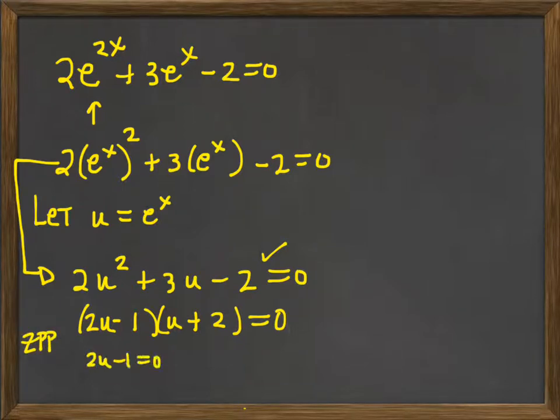So 2u minus 1 equals 0 which means 2u equals 1 which means u equals a half or u plus 2 equals 0 and u equals negative 2. I've done a lot of work but I'm not quite done.